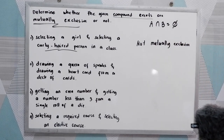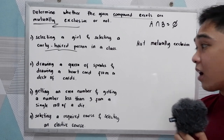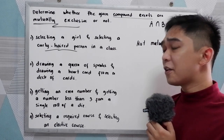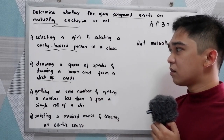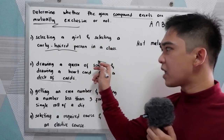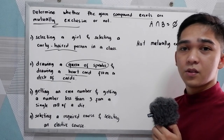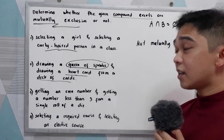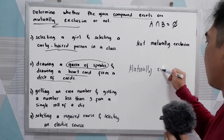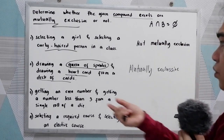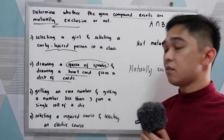Next: drawing a queen of spades and drawing a heart card from a deck of cards. We have 52 cards in a deck. A queen of spades is different from a heart card, so there is no common element between the two events. That is mutually exclusive.